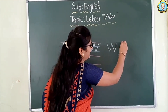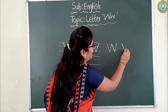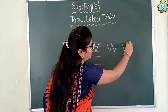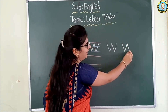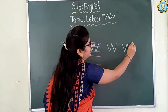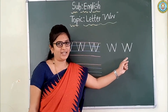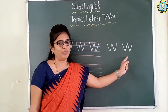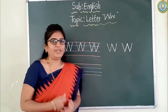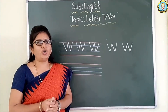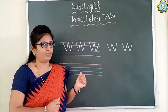See here once again. First you write the slanting line, then go up with another slanting line, and come down with another slanting line, then again go up with another slanting line. Which letter is it? Letter W.